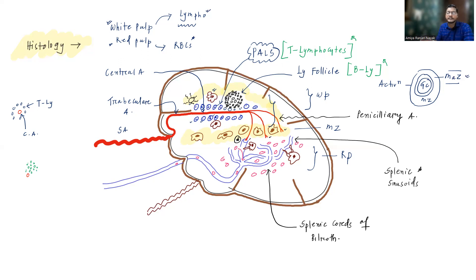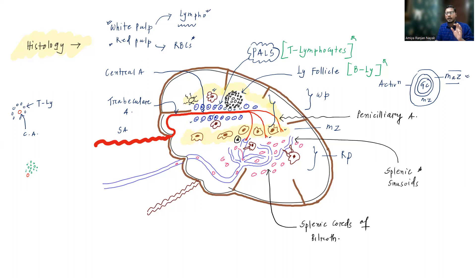Similar to how lymph nodes have medullary sinusoids surrounded by medullary cords, in the spleen's red pulp you will find splenic sinuses surrounded by splenic cords of Billroth. The penicilliary arterioles can either directly open into the splenic sinusoid — known as closed circulation — or open blindly into the splenic cords, which is known as open circulation.